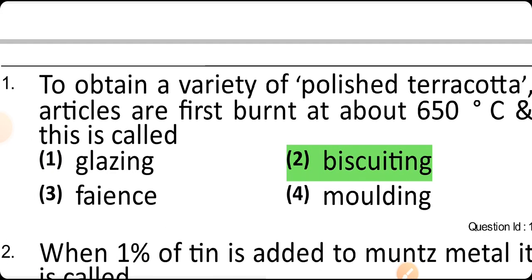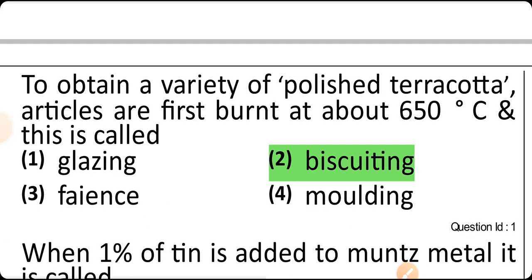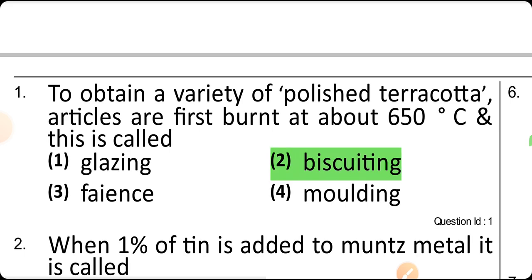To obtain a variety of polished terracotta articles, they are first burned at about 650 degrees, and this is called biscuiting.